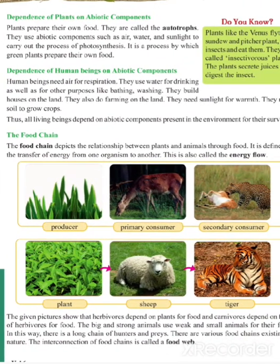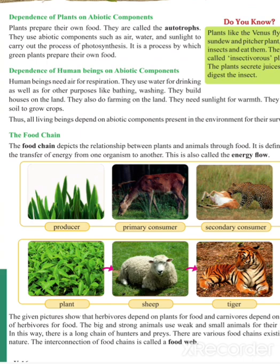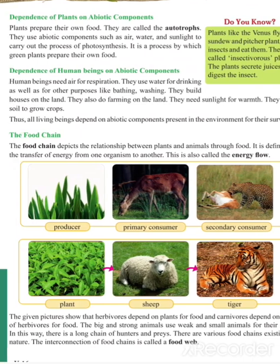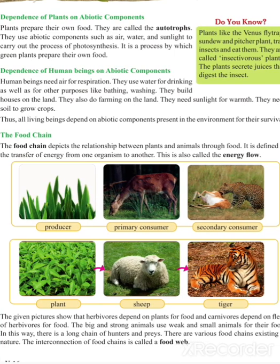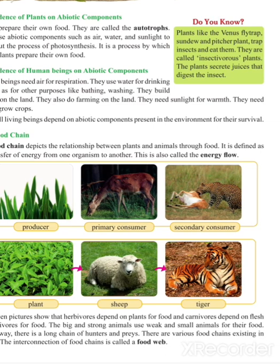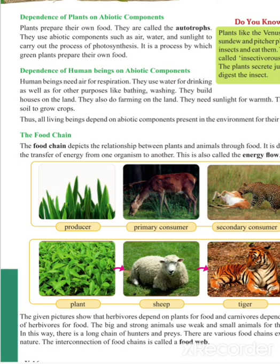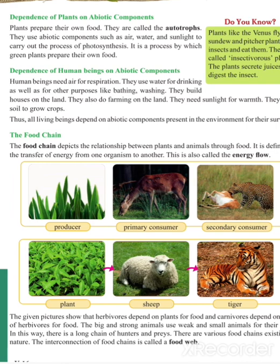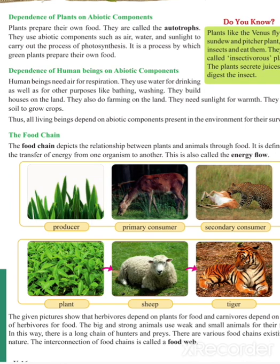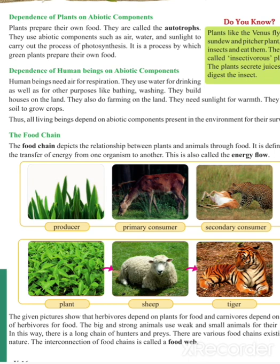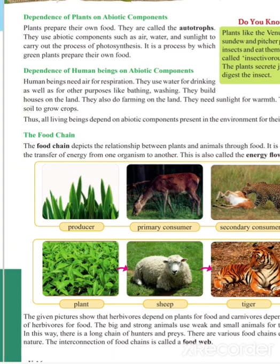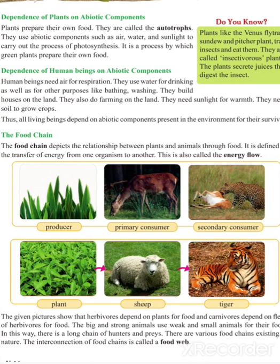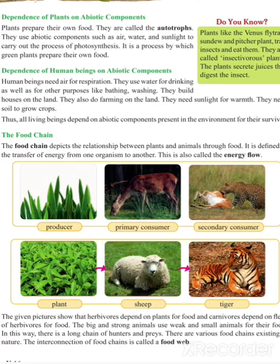The given picture shows herbivores depending on plants for food, and carnivores depending on the flesh of herbivores for food. The bigger and stronger animals use weak and small animals for their food. In this way the food chain is completed. There are many different food chains existing in nature, and the interconnection of food chains is called a food web.